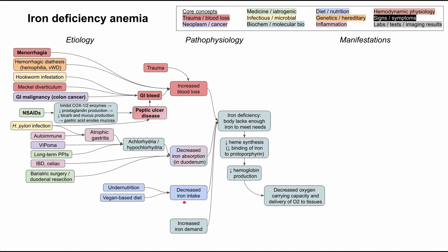Decreased iron intake is a malnutrition issue — you're simply not getting enough iron in your diet. A vegan-based diet might put you at risk, though it's possible even for non-vegans. In the United States, grains and flour are often fortified with iron, but in some other countries without iron fortification, a wheat- or flour-based diet could lead to insufficient iron intake and iron deficiency anemia.